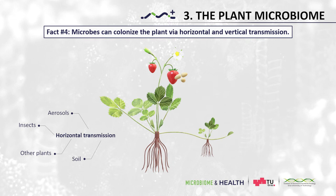Soil microbes can colonize the rhizosphere and the root endosphere and move from there to above ground plant tissues. Apart from soil, horizontal transmission also occurs through aerosols, insects, and other plant tissues.